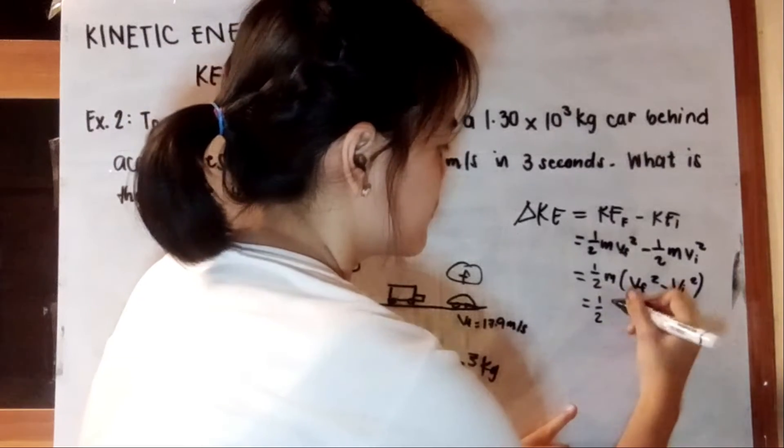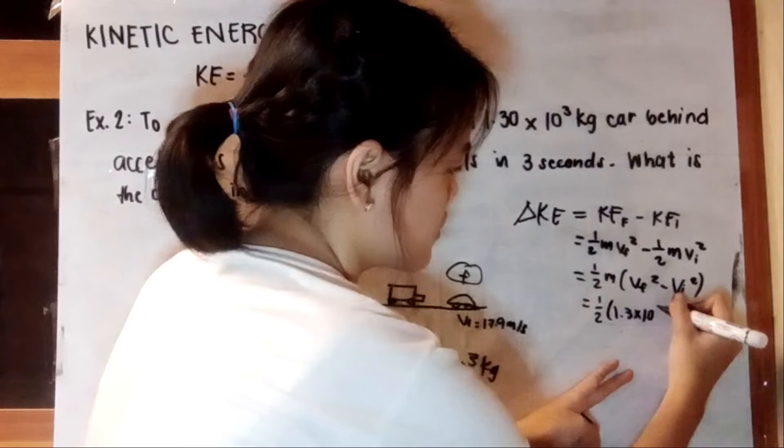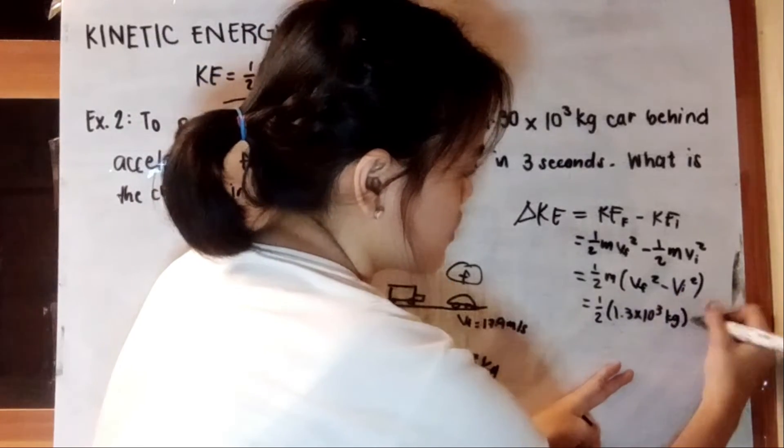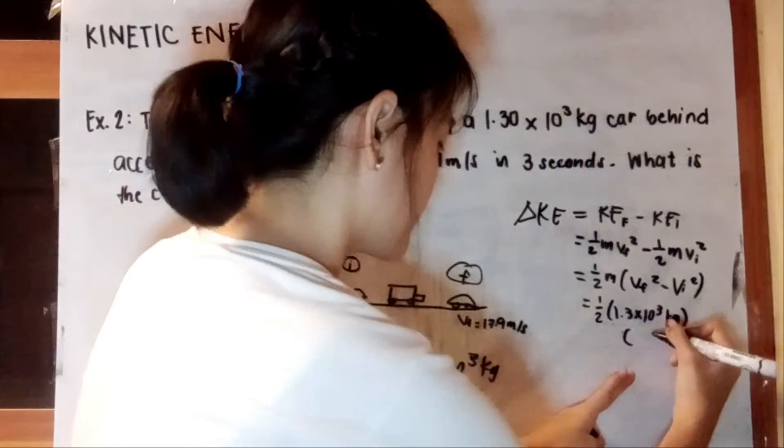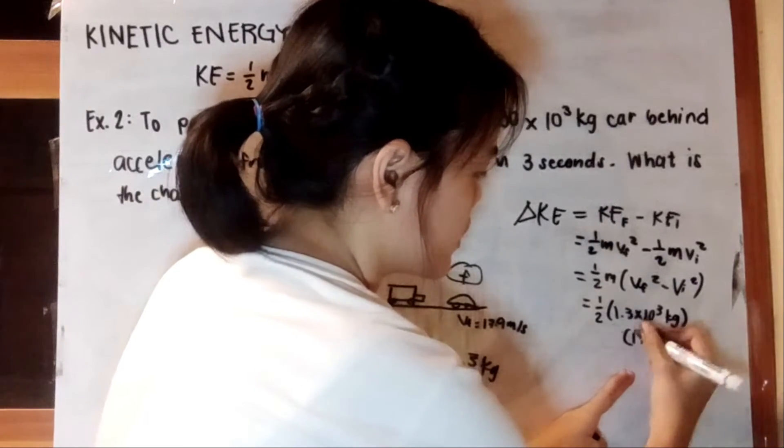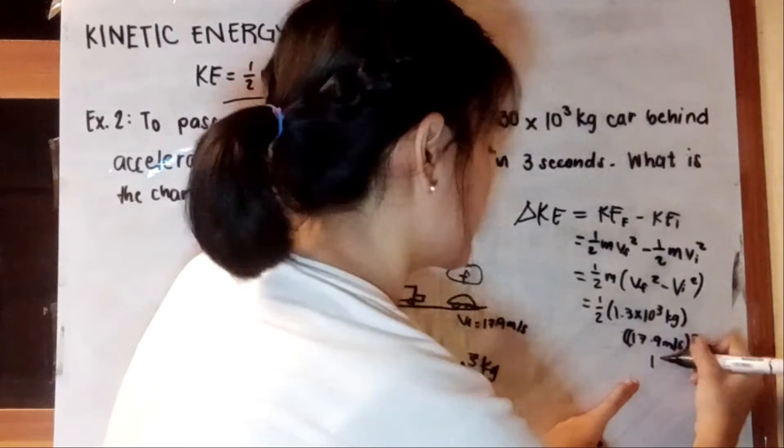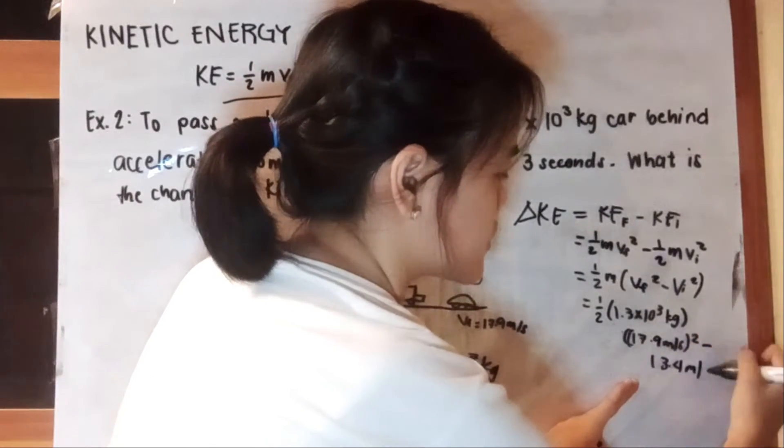So we have one-half times 1.3 times 10 cubed kilograms multiplied by 17.9 meters per second quantity squared minus 13.4 meters per second quantity squared.